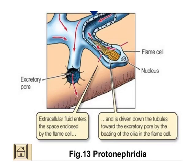Extracellular fluids enter the space enclosed by the flame cells, driven down the tubules toward the excretory pores by the beating of the cilia in the flame cells. The arrow shows the direction of excretory waste product movement — through excretory pores the waste is expelled outside the body.